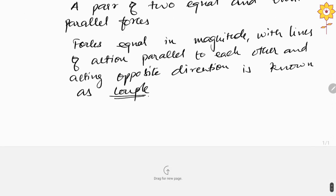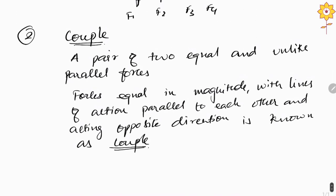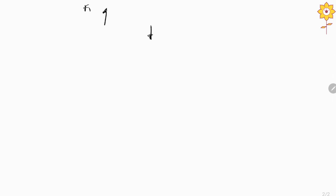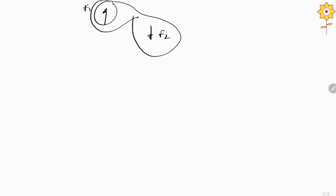A basic example: we have one force F1 acting upward and another force F2 acting downward. This pair forms a couple, because the forces are parallel to each other — the line of actions are parallel to each other — but the direction is different. So this is a couple.